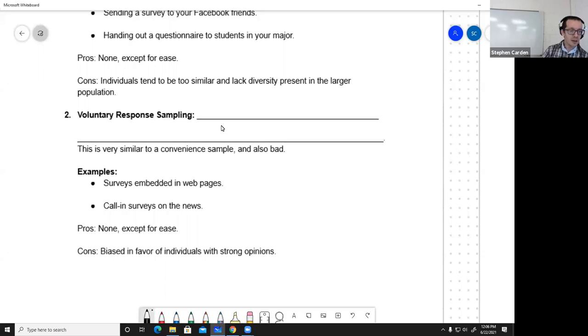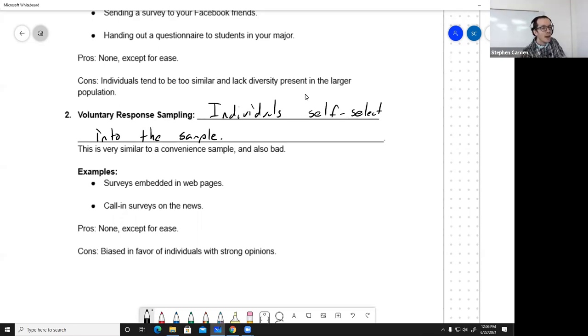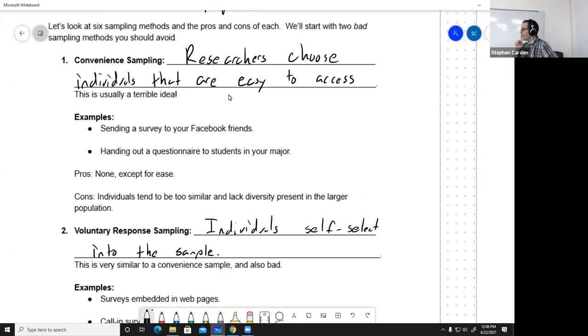The second bad method is voluntary response sampling. Here the individuals self-select into the sample. This is kind of like convenience sampling, but in a way it's even worse. In convenience sampling, the researchers are saying you're nearby, you're easy, you come be in the sample. In voluntary response, the researchers are even lazier and they're just making a blanket call saying come join the sample if you want to.